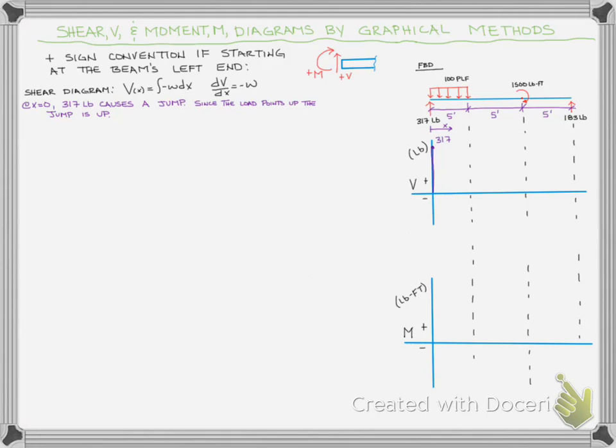That negative sign in the mathematical relationship can be a little bit confusing, but if you start from the left side, the rule is simple: if the arrows are pointing upward, your shear goes up; if the arrows are pointing down, your shear decreases. We're not going to subtract out a hundred pounds from the hundred pounds per lineal foot yet, because remember that's per lineal foot — we've only gone zero feet, so we don't get to a hundred until we've gone one full foot. So it is 317 straight up.